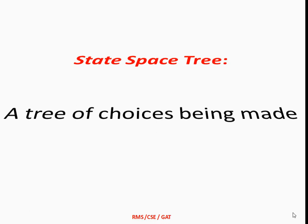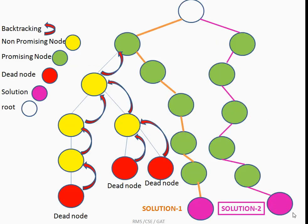The state space tree is constructed based on the choices being made. The root is the starting point of the state space tree, representing the state before the search begins. The leaves represent either a dead end or a solution. For example, in this structure we have three dead-end nodes and two solution nodes.